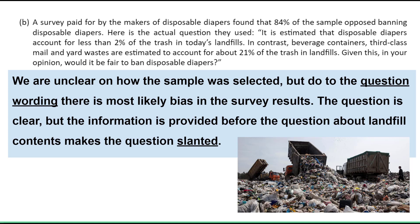Even though we're unclear on how the sample was selected, whenever you're looking at research, look for how they collected the data. If it was a convenience sample or voluntary response, we already know there are issues with representativeness. Assuming they took a simple random sample, even so, due to the question wording, there's most likely bias in the survey results. The question itself is clear, but the information provided before it about landfill contents makes the question slanted. They also use loaded vocabulary — like 'is it fair to ban disposable diapers?' — which could pressure subjects into giving one particular response.